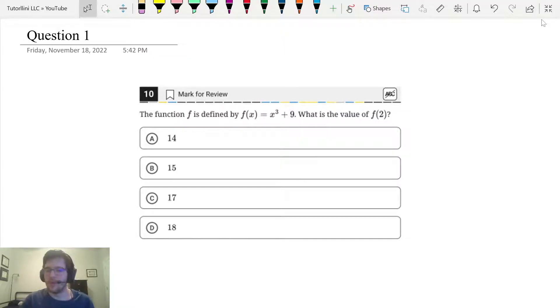So whenever you see function notation with f of or g of a number, something like that, the number inside the parentheses always tells you your function input or your x.